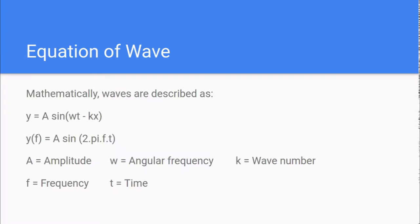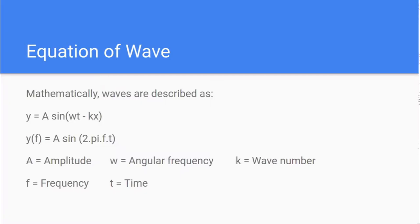Now let's get into some mathematical concepts of waves. Piano produces sound waves, and these are generally plane progressive waves, meaning they travel in a plane and are sinusoidal in nature. Mathematically, any wave can be described as y = A·sin(ωt − kx), where y is a function of time t and displacement x, omega is angular frequency equal to 2π times frequency, and k is wave number equal to 2π divided by wavelength lambda.